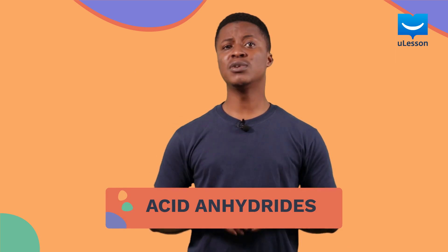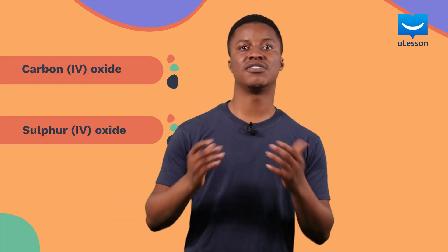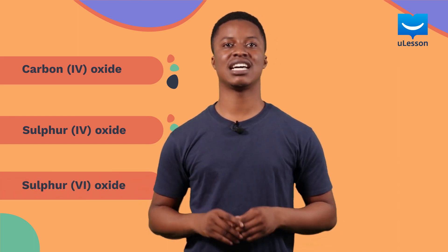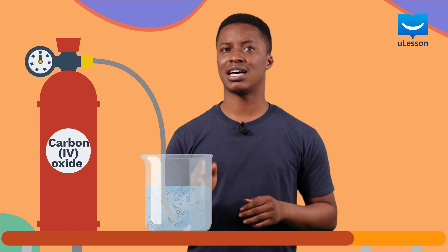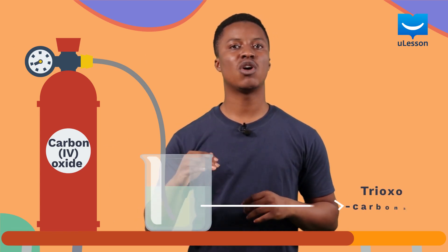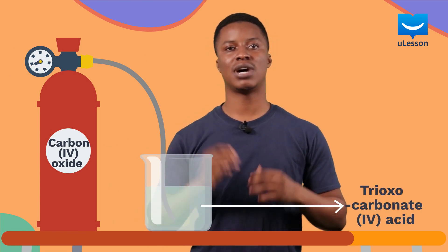Some examples of these acidic oxides are carbon dioxide gas, sulfur dioxide gas, and sulfur trioxide gas. Carbon dioxide gas can dissolve in water to form a weak acid known as trioxocarbonate acid, also called carbonic acid.